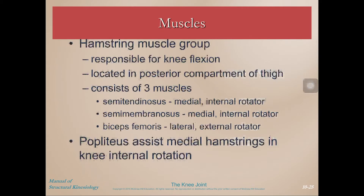The hamstring muscle group is responsible for knee flexion. We have three muscles located in the posterior compartment of the thigh: semitendinosus, semimembranosus, and biceps femoris. You'll remember all three of these from the hip videos. We also have the popliteus, which assists the hamstrings in knee internal rotation.